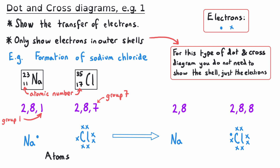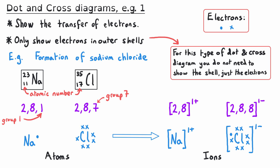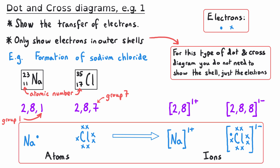Sodium has lost one negative electron, so it now has a charge of 1+. We show this by putting square brackets around the electronic structure and the dot and cross diagram, with a 1+ charge in the top right outside those brackets. Chlorine has gained one negative electron, so it now has a 1− charge, shown with square brackets and 1− outside them. This could be a 4-mark GCSE question, where you are expected to show the electronic structure of the original atoms, the structures afterwards, the square brackets, and the charges of the ions produced.